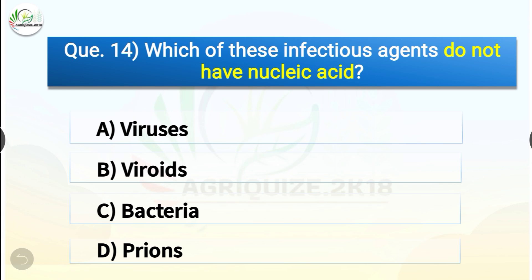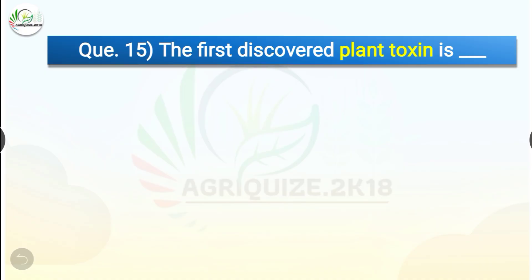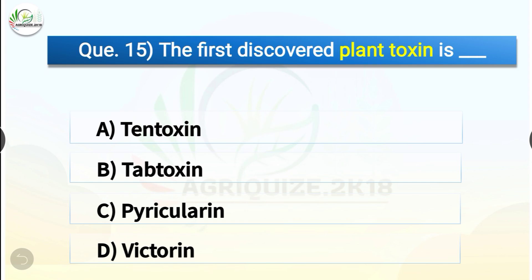Question number fourteen: Which of these infectious agents do not have nucleic acid? The options are viruses, bacteria, or prions. The correct answer is option D, prions. Prions, so called because they are proteinaceous, are infectious particles smaller than viruses that contain no nucleic acids — neither DNA nor RNA.